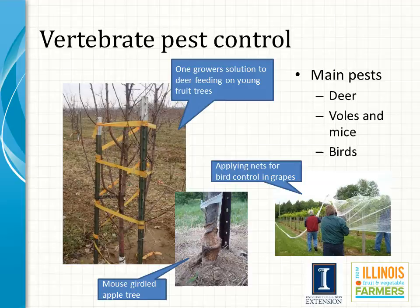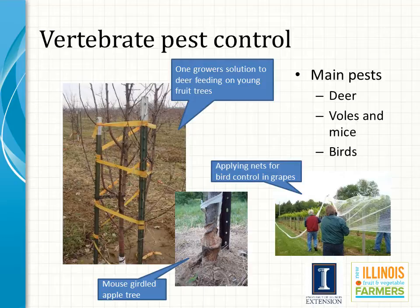Voles, deer, and birds are the three major vertebrate pests of fruit plantings. Voles are mouse-like mammals that eat the bark and roots of young fruit trees and thornless blackberries in winter, and are frequently a serious problem. Deer consume the new shoots of fruit trees. Birds damage the fruits of blueberry, cherry, gooseberry, and grape plantings.